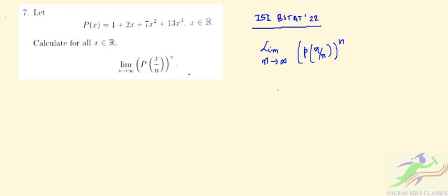P(0) equals 1, so this is of the form 1 to the power infinity if we put the limit as n tends to infinity. We know that in this form it can be written as the limit.